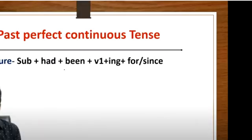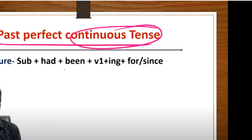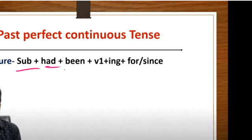So we are learning past perfect continuous tense. Past perfect continuous tense: subject plus had been plus verb first form with -ing, and for or since.